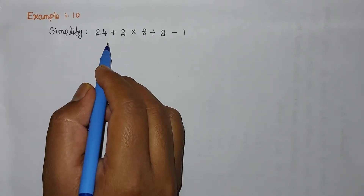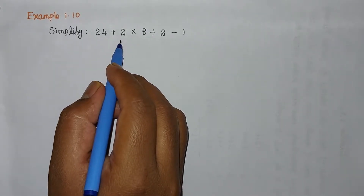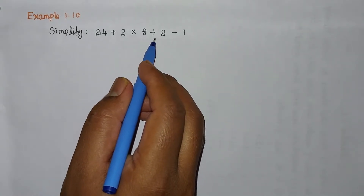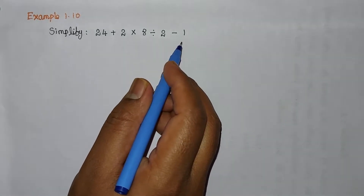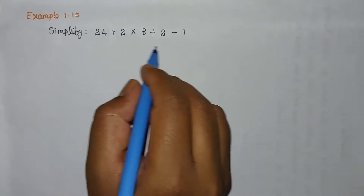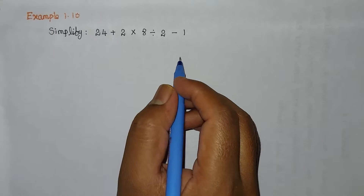Now we are going to see Example 1.10. Simplify: 24 plus 2 into 8 divided by 2 minus 1.